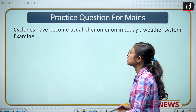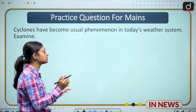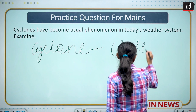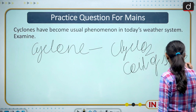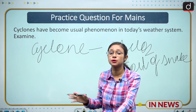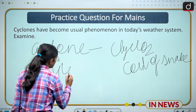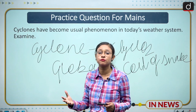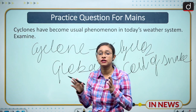The next slide is the practice question for mains: 'Cyclones have become a usual phenomenon in today's weather system — examine.' First, define the cyclone: it has been derived from the Greek word 'cyclos,' taken from the coil of a snake, coined by Henry Paddington. For the main part, climate change is the biggest factor — global warming, rising sea temperature, ocean wind, ocean temperature, and high winds are all responsible for the increasing frequency of cyclones, including why they are touching the Arabian Sea again and again.